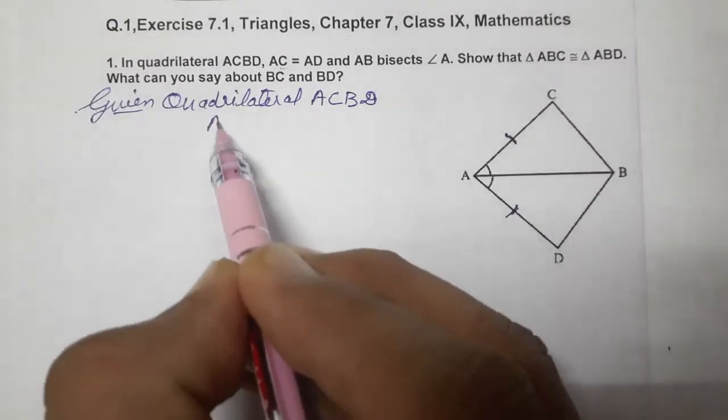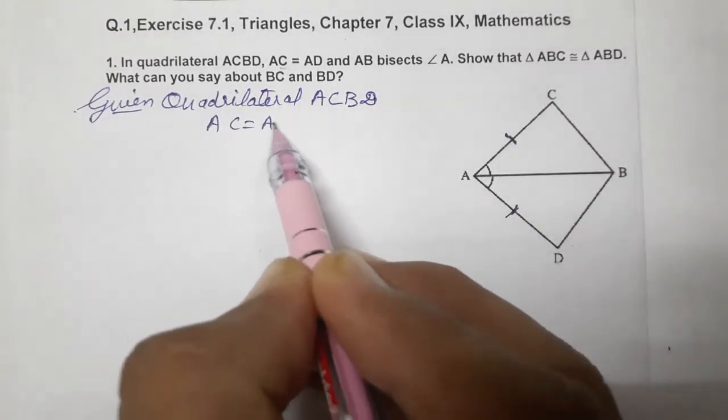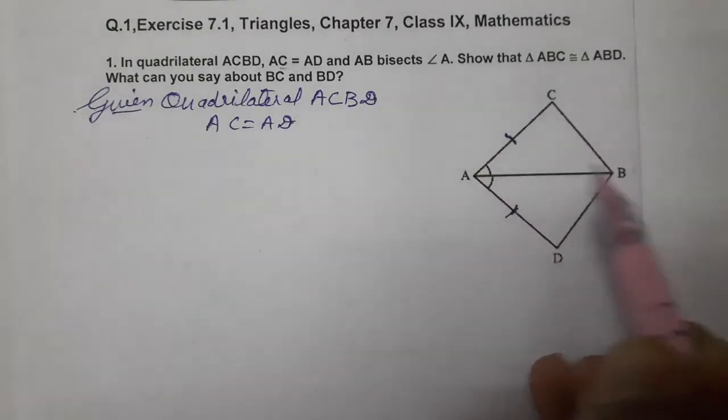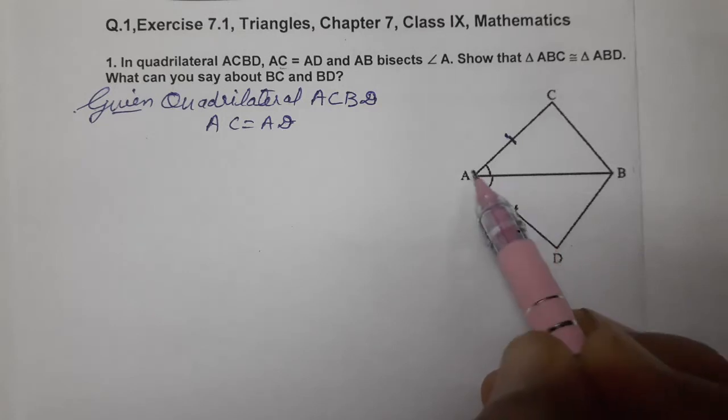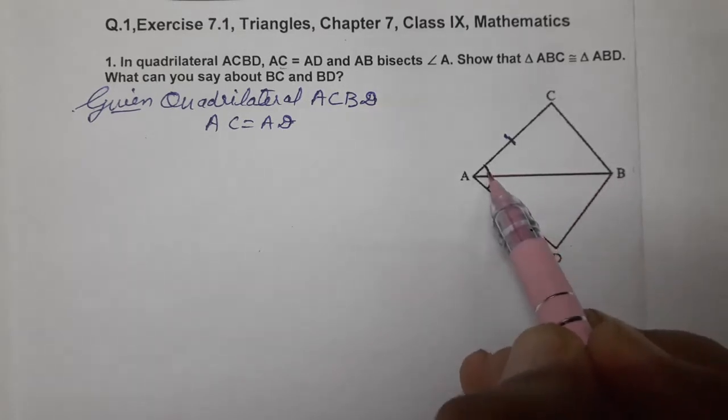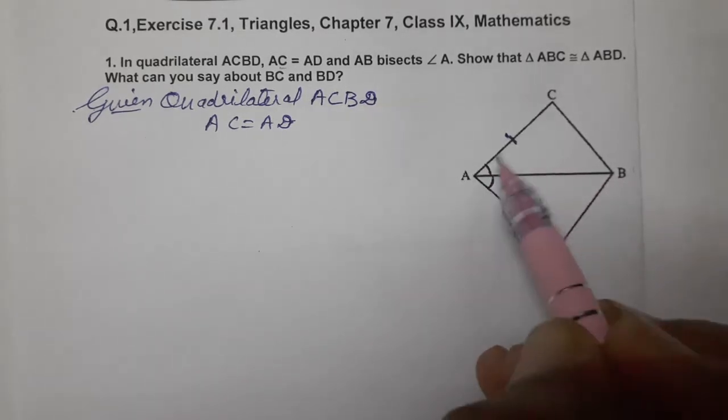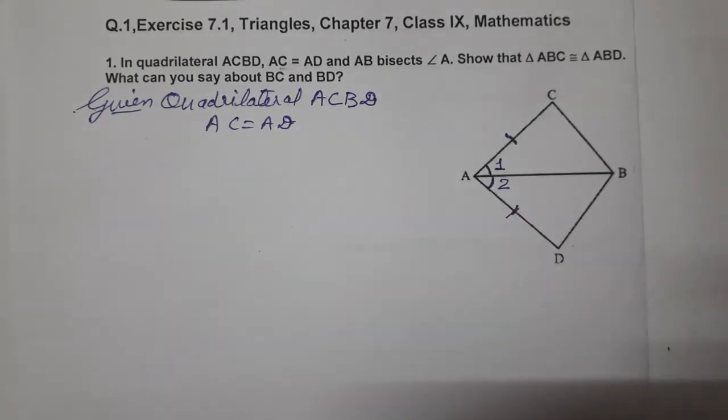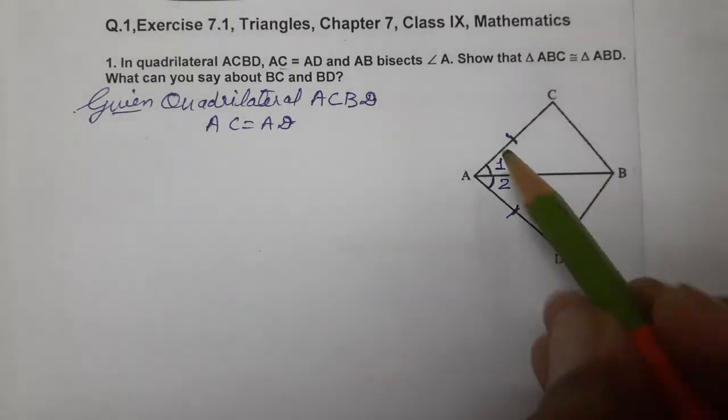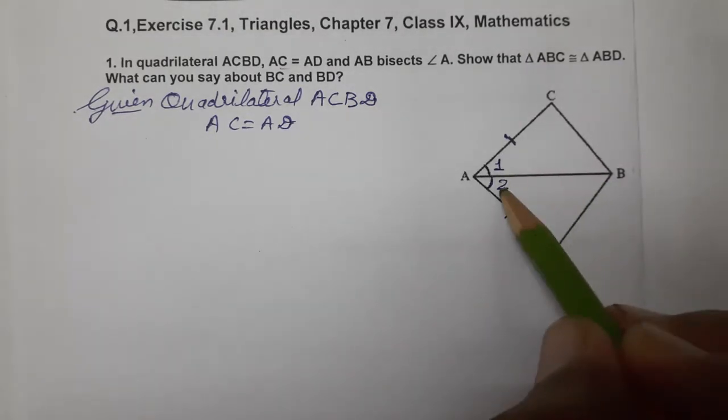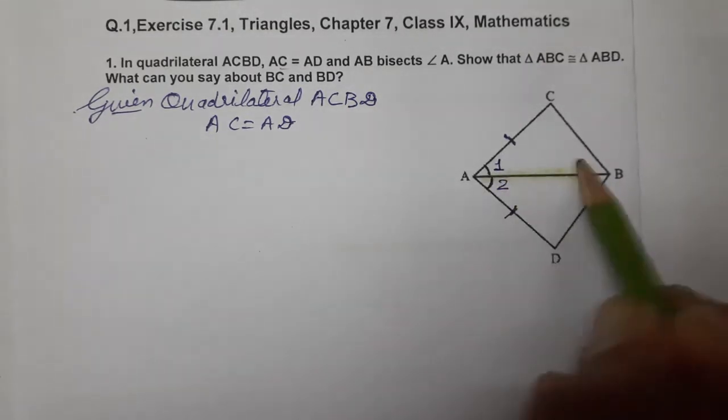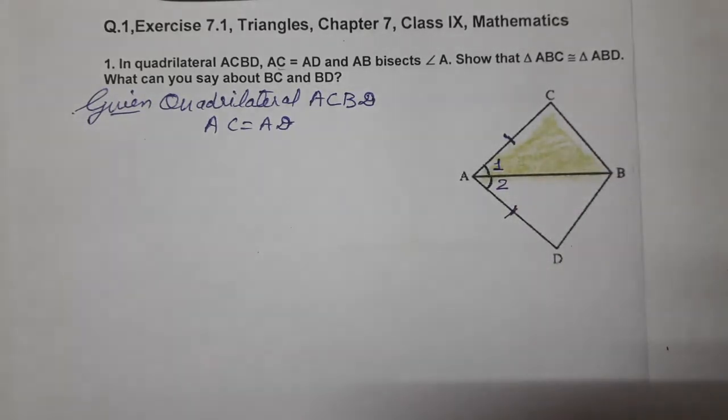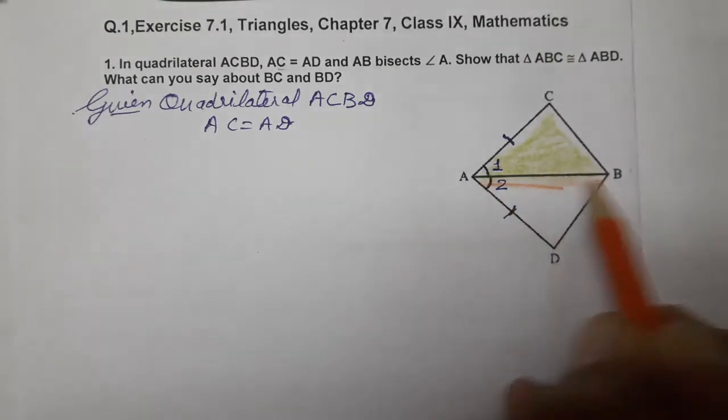AC equals AD is given to us, and AB bisects angle A. AB bisects angle A means this angle and this angle are equal, so angle 1 equals angle 2 in this triangle.